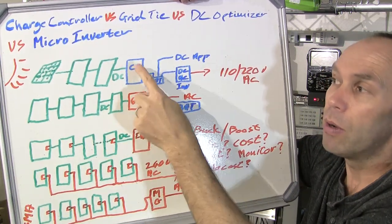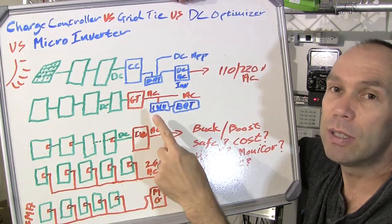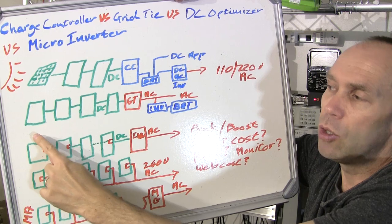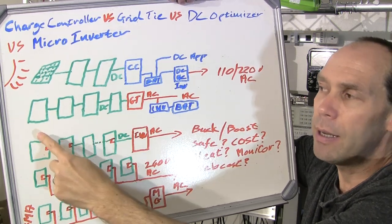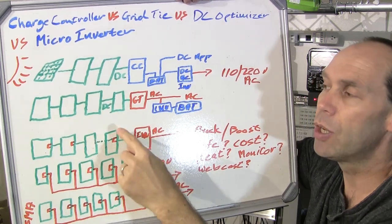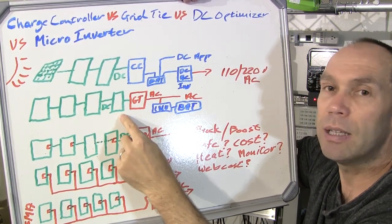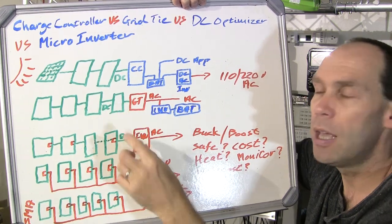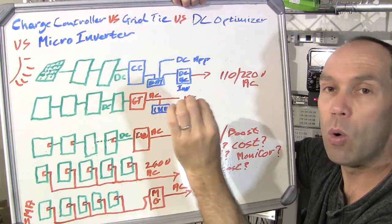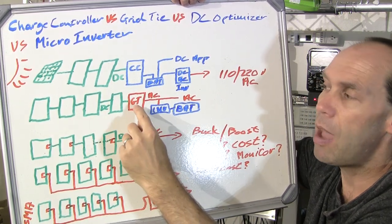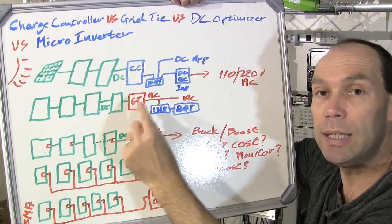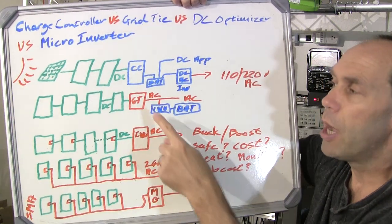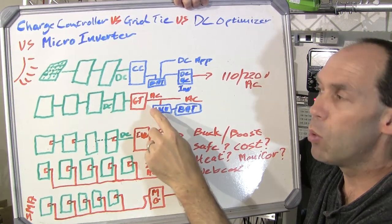Now let's talk about the grid tie solution, which is probably one of the most common installations happening today. You have a string of panels and the idea is to string quite a few panels together to get a higher voltage. A higher voltage is beneficial in two regards: first, it means less current has to be carried by the wires, reducing losses; and second, your grid tie inverter will have a better time inverting a higher DC voltage to the higher AC voltages required for households. If you're in a normal household where your appliances are AC, this would obviously seem like the more logical route to go.